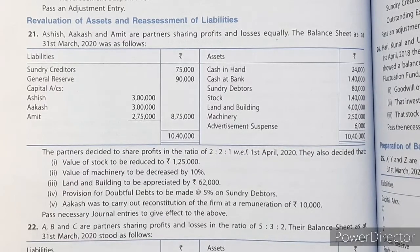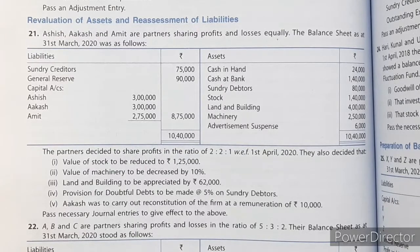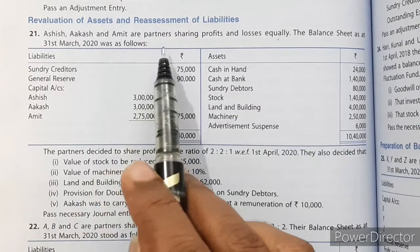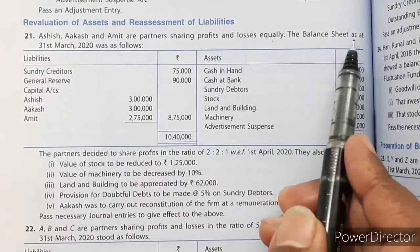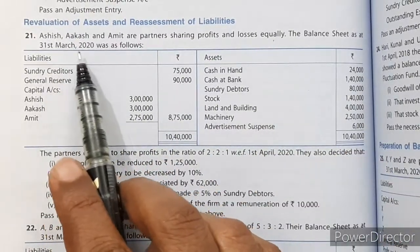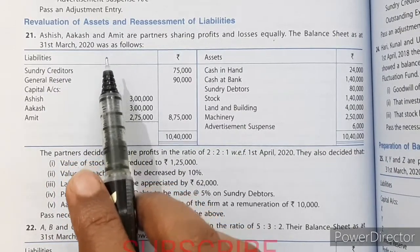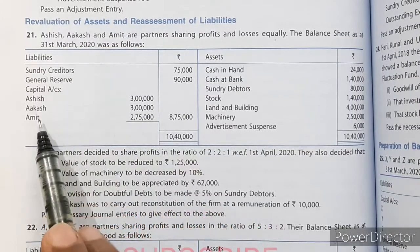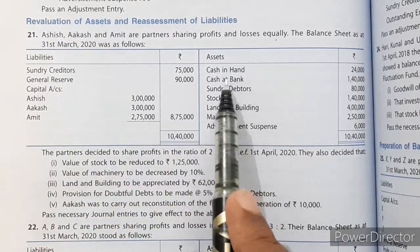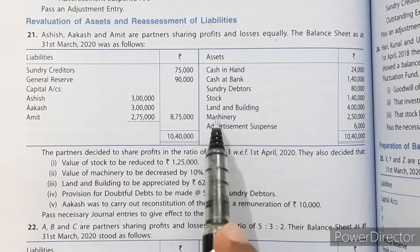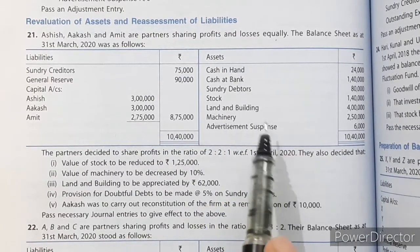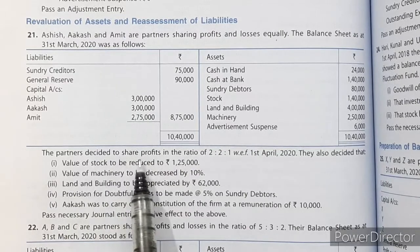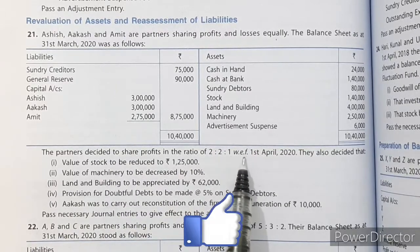Question 21 from page 4.42: Ashish, Akash, and Amit are partners sharing profits and losses equally. The balance sheet as at 31 March 2020 shows: on the liability side — sundry creditors, general reserve, and capitals of the three partners; on the asset side — cash, bank, debtors, stock, land and building, machinery, and advertisement suspense.